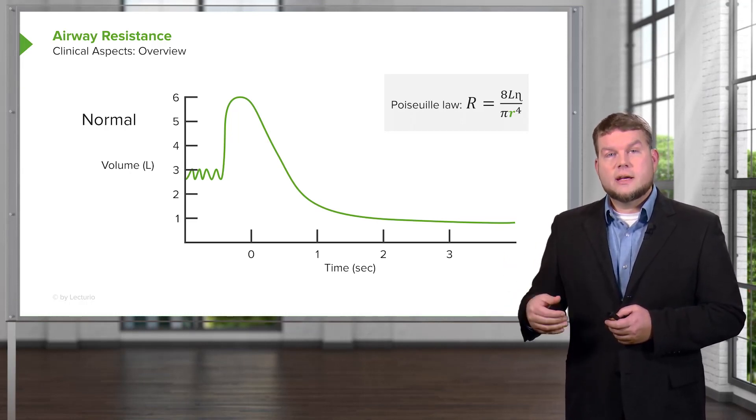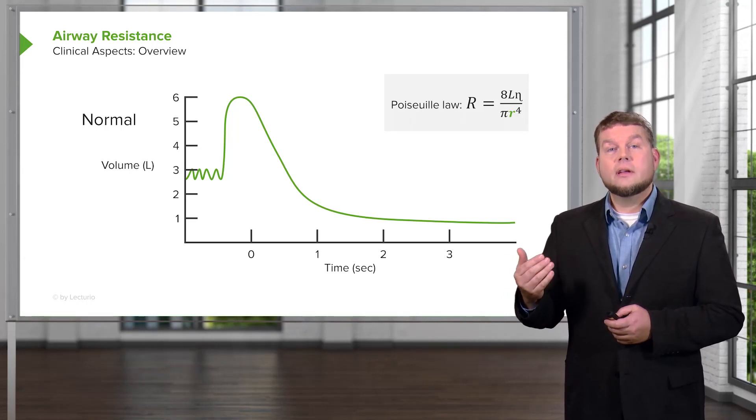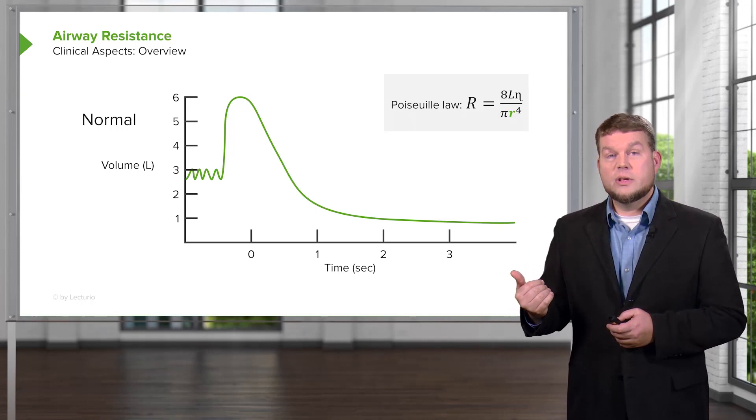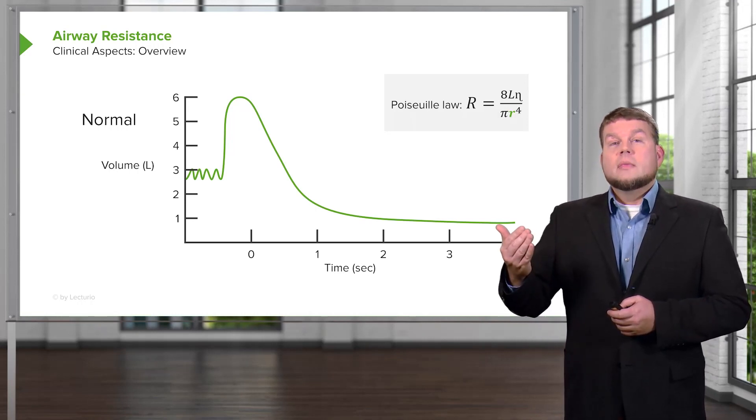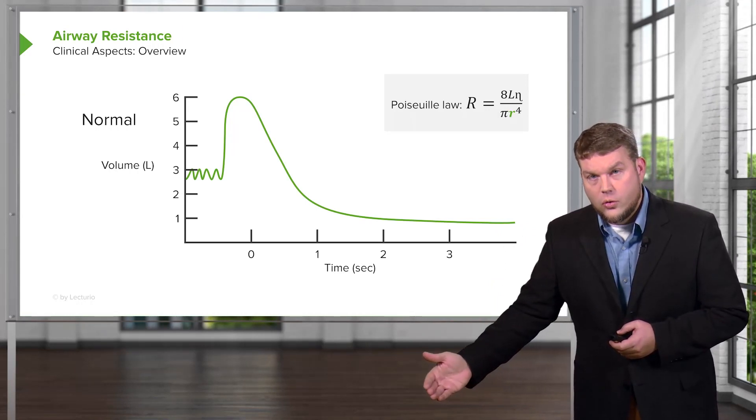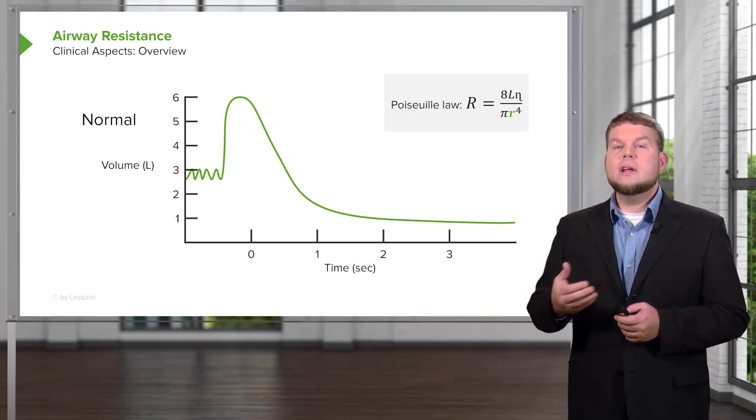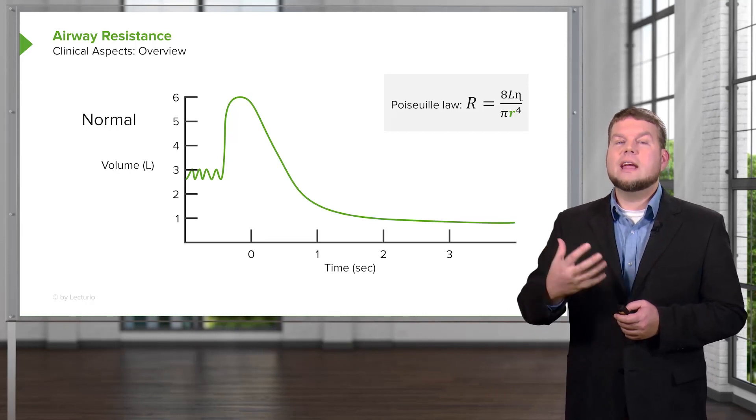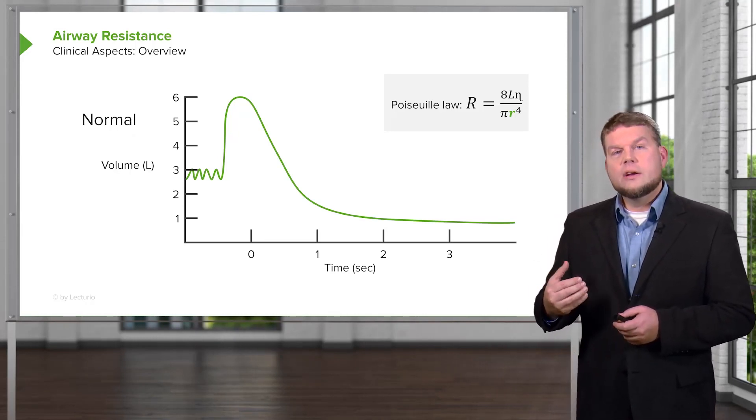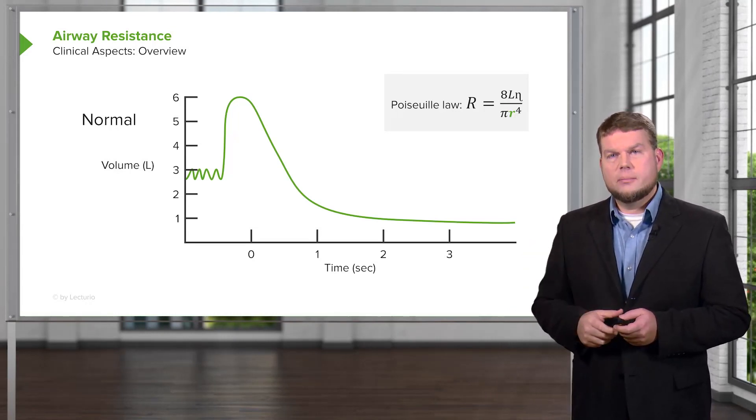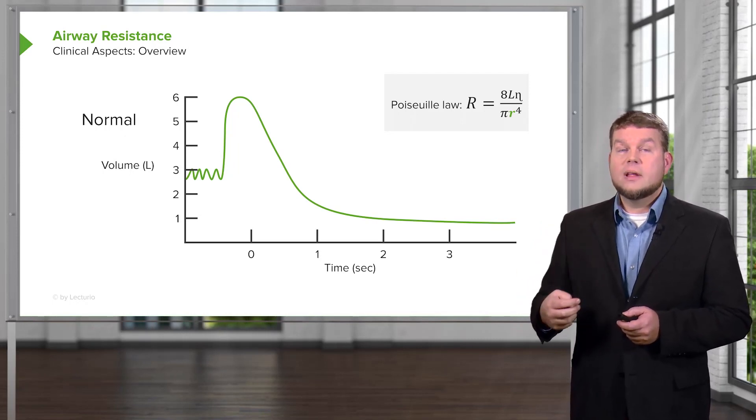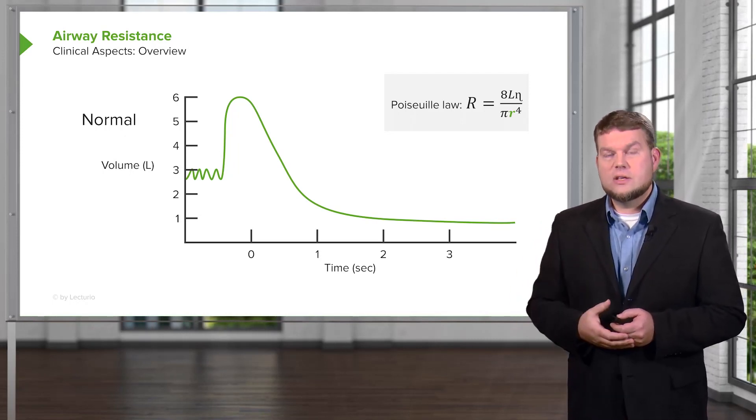So what the green line is showing you are inhalations and exhalations. In the example, it's normal breaths in and out, followed by a maximal deep breath in and then a maximal breath out, breathing out until you get all the air out of your lungs. And what we're looking for here is a volume change over time. If you can get air out rapidly, then you have less resistance in your airways.